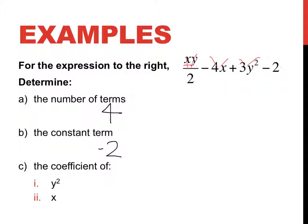The last question is, what's the coefficient of y squared? Well, how many y squareds do we have? The number that comes directly before the y squared is the coefficient, and it's 3.